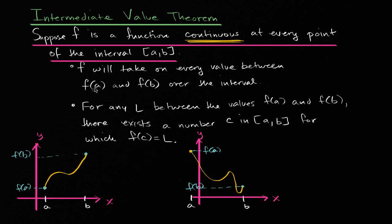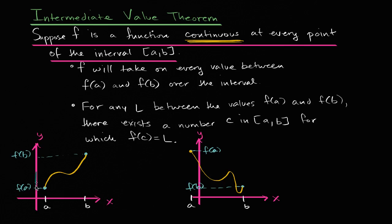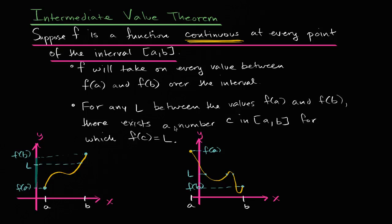Now, given that, there are two ways to state the conclusion of the Intermediate Value Theorem. You'll see it written in one of these ways. One way to say it is: f will take on every value between f of a and f of b over the interval. In both of these cases, every value between f of a and f of b is being taken on at some point. You can pick some arbitrary value l — well, l happened right over there. For any l between the values of f of a and f of b, there exists a number c in the closed interval from a to b for which f of c equals l.